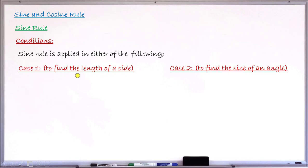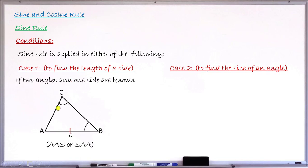In case one, if you want to find the length of a particular side of the triangle, you must have two angles and one side known. Looking at this drawing: this angle is marked, meaning it is given; this angle at B is also marked, meaning it is given; and the length of side AB is also marked. You can then use this to find either the missing side AC or the missing side BC.